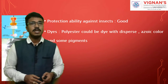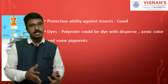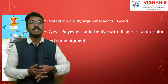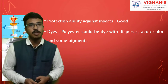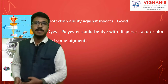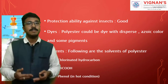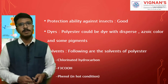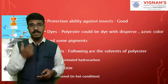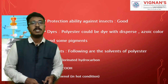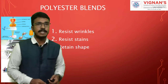Resistance to insects is good. Regarding dyeing of polyester — because of its compact structure with minimal gaps, polyester must be dyed with a special class of dyes. We can use disperse or azoic colors and some pigments. The solvents used for polyester include hot phenol, in which polyester will dissolve.